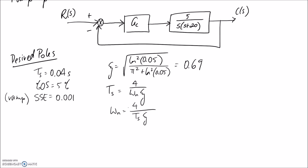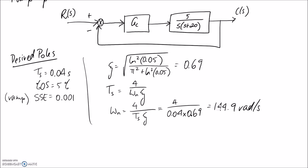Because we know the settling time we're aiming for and we've just figured out zeta, we can get an answer for the natural frequency. It comes out to be about 144.9 radians per second. Based on these two quantities — the damping ratio and the natural frequency — we should be able to figure out the desired poles.